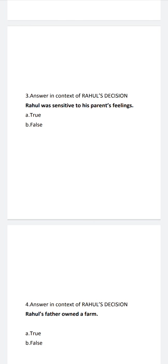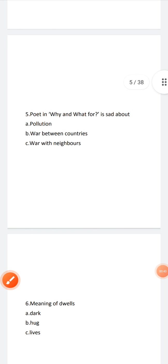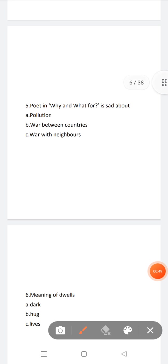Answer in context of Rahul's decision: Rahul was sensitive to his parents' feeling—true. Now next, Rahul's father owned a farm—true. Now, poet in war and what for is sad about war between two countries.